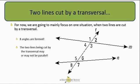We're going to look at a specific situation and mainly focus on when two lines are crossed by a transversal. What happens there? There are two intersections and a total of eight angles formed, so in each intersection there are four angles. The two lines that are cut by the transversal may or may not be parallel — it depends.